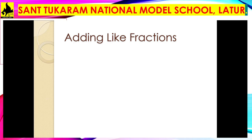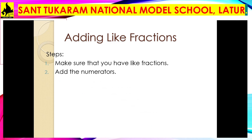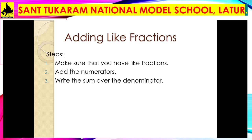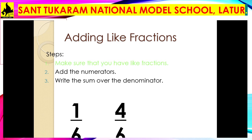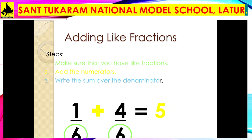For addition of like fractions, follow these steps. Step one: make sure the given fractions are like fractions by checking the denominator. Step two: add the numerators only. Step three: write the sum over the same denominator. Example: 1/6 + 4/6. They are like fractions with denominator 6. Adding the numerators: 1 + 4 = 5. Write the sum over the denominator: the answer is 5/6.